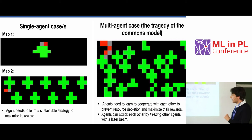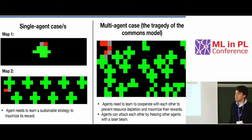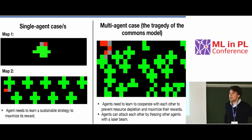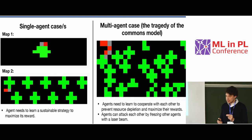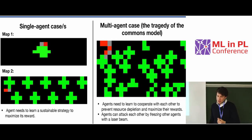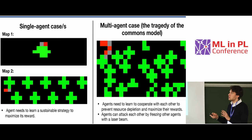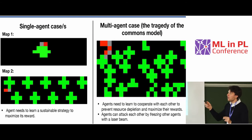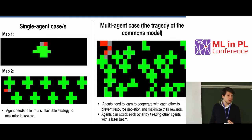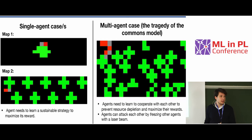This was actually a very important thing, because it gives the ability to penalize other agents. For example, if one agent is depleting — taking too many apples — other agents can actually freeze it with the beam. They can penalize it for that behavior.